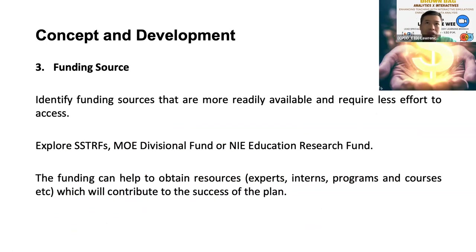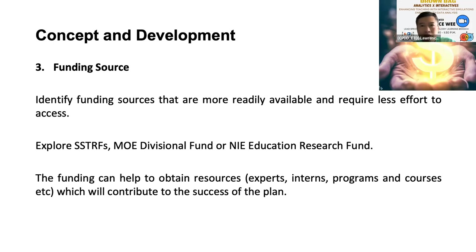For anything to work, you need to have a funding source. This is very important because as senior specialists we have something called the Senior Specialist Track Research Fund. It is available to us, and I recommend that if you are a specialist, do explore this fund — it can be quite easily approved. Anything higher than that of course requires more levels of clearance. If you have tapped on certain other funds, you can also look at other available funding areas. Funding can help you get experts, and sometimes we cannot be doing all the coding ourselves.